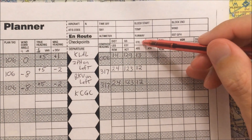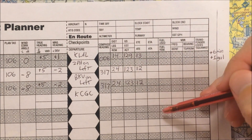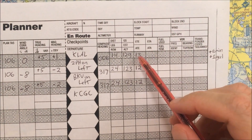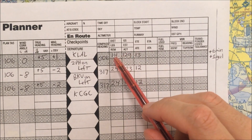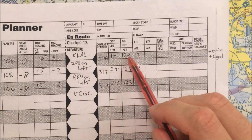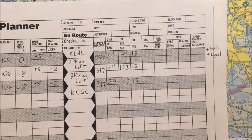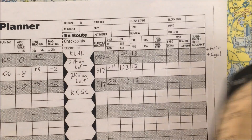Now we're looking to compute estimated time en route for each of our legs. To compute that, we need distance and ground speed, both of which we have, and we can use our E6b to figure out the values.